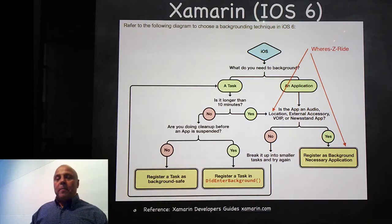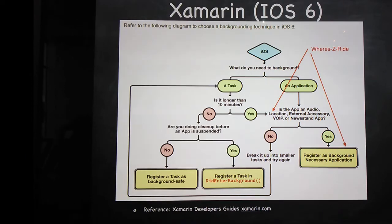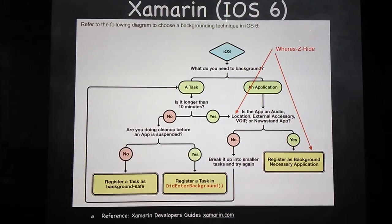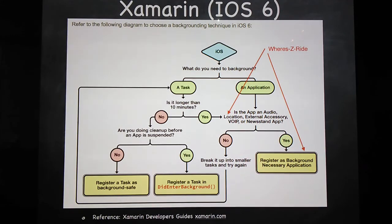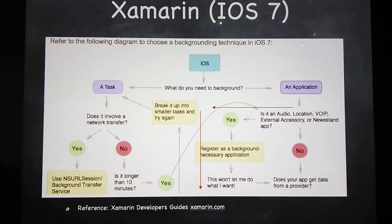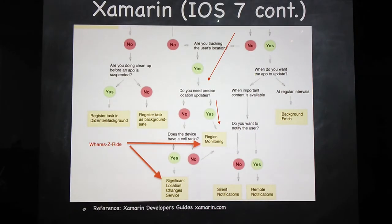On iOS 6 and iOS 7, we're building a location app. The red arrows guide us down: it is a background-necessary app, it is a location app, I'm registering with iOS as a background-necessary app. Am I tracking user location? Yes. Do you need precise updates? Yes — so use region monitoring. And do you have a cell radio? Yes — so use significant location changes.